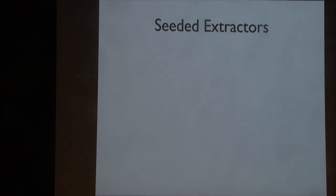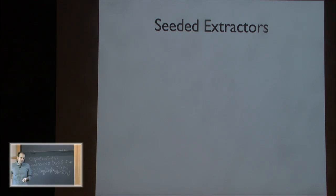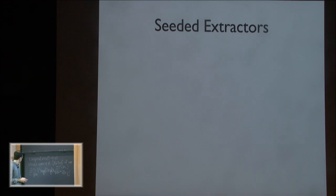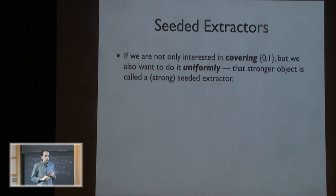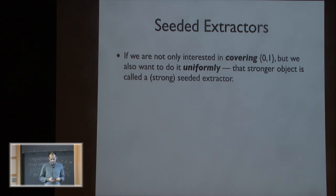Questions about dispersers? What are the relative sizes of N and D? Most of the talk will be devoted to this question. Basically, you want D to be as small as possible and you want K to be as small as possible. A disperser is kind of a weak object — you want a non-constant output.